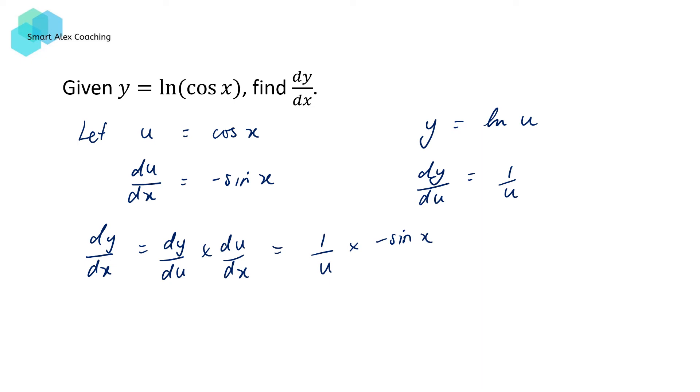But because u equals cos x, this equals 1/cos x times negative sin x. Now, if you know your trigonometric identity, you will recognize that -sin x / cos x is in fact equal to -tan x. So the derivative of log(cos x) is in fact equal to -tan x.